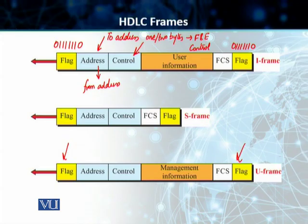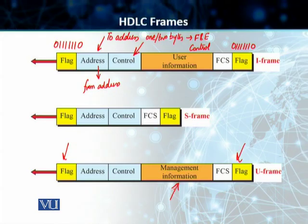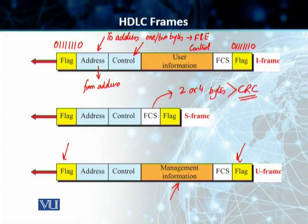Then you have the information field. There is no information field in the S-Frame. In the I-Frame, this field contains the user data from the network layer, and in the U-Frame, it contains management information for the link. Lastly, you have the Frame Check Sequence, the FCS field. This is the HDLC error detection mechanism and can contain 2 or 4 bytes — those bytes are nothing but the well-known CRC.